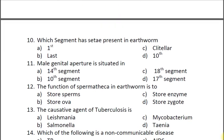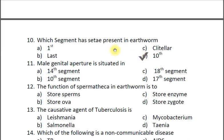Question ten: Which segment has setae present in the earthworm? A first, B last, C clitellum, D tenth. The correct option is D tenth. Setae are present in all segments but are absent in the first, last and clitellum segment. Setae are S-shaped stiff bristles used for locomotion in earthworm.